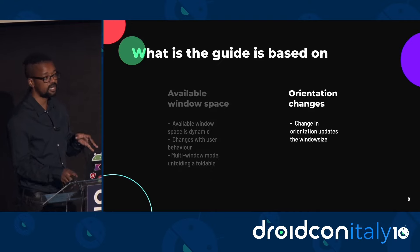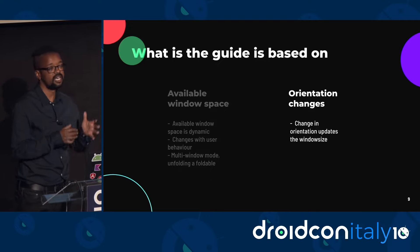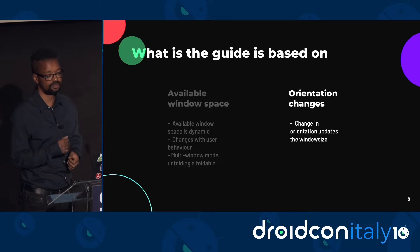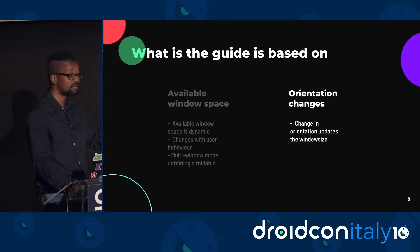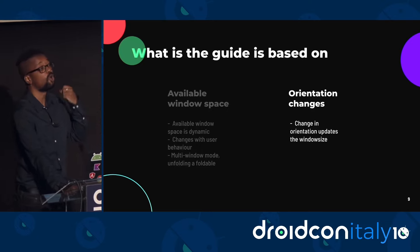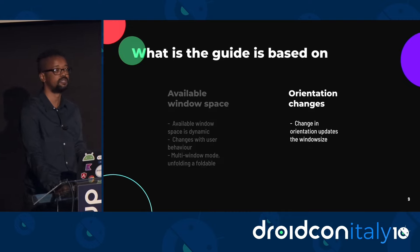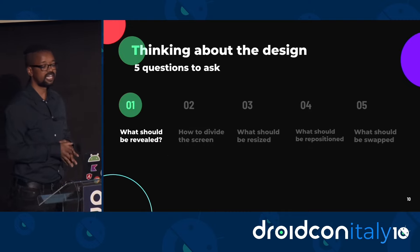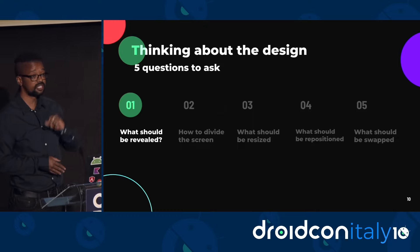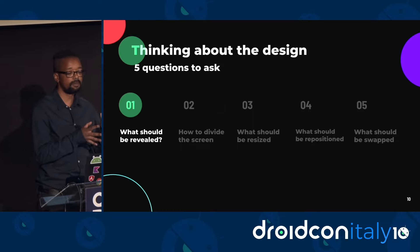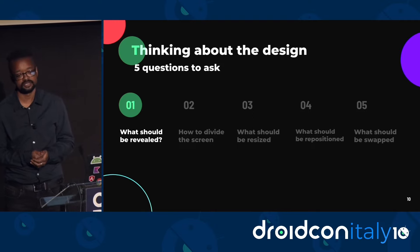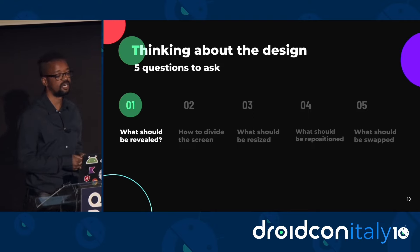With this in mind, this guide is trying to break you away from designing for 'is it a phone or is it a tablet,' but rather thinking about the amount of screen space or window space available at any point in time. The recommendation is to design for one window size class, and then in order to properly cater for the other window size classes, you start by asking specific questions. The first question is: what should be revealed?